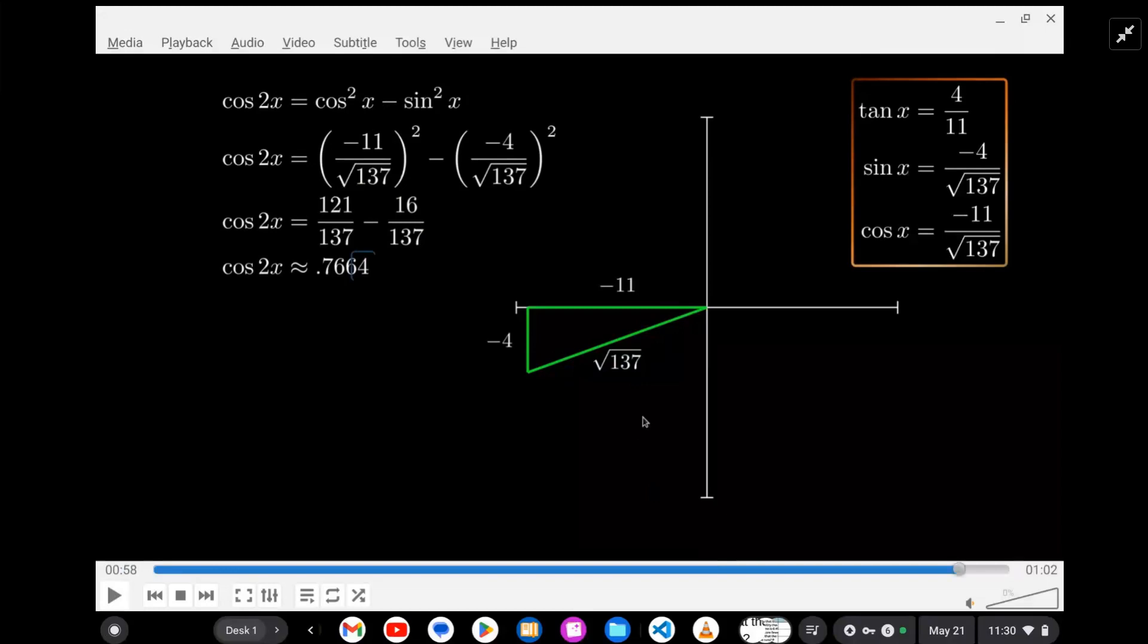So that's about all there is to that. First thing is to determine which quadrant you're in from your given information. After that, draw the triangle. And then you can get any trig ratio that you need from the triangle. And then we're using the double angle formula to solve for cosine 2x.